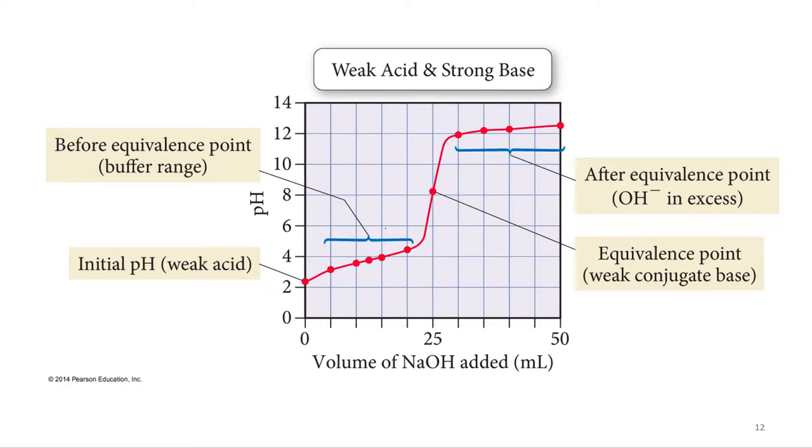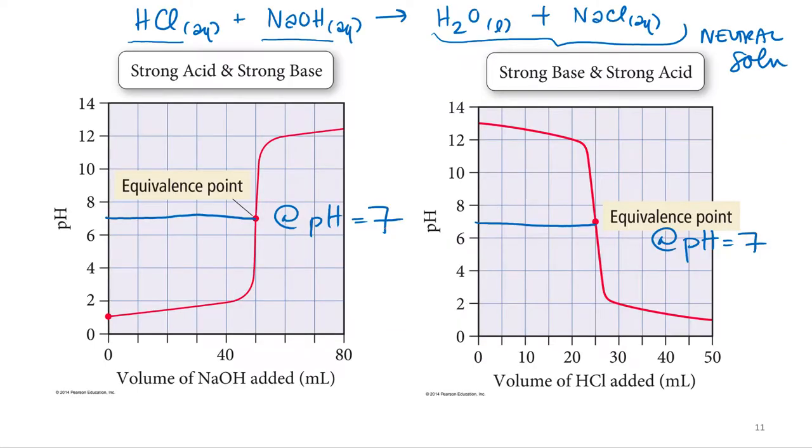Weak acid and weak base titrations are going to be a little bit different. One thing that's initially different is that if you look at this strong acid, strong base titration, the slope of this line is pretty much linear. As you add the strong base, the pH goes up in a linear fashion.